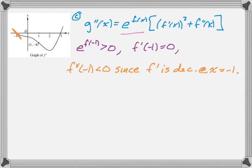And then we combine that. So we have a positive, we have 0, and we have a negative. So we're doing a positive times a negative, ultimately. Therefore, g''(negative 1) is less than 0. And that would be my answer to that.